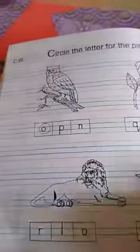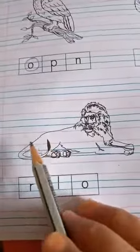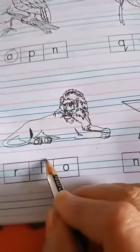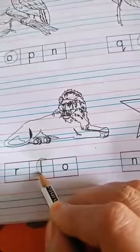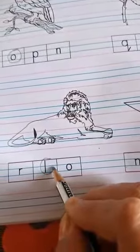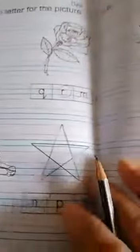Come to the next picture. This is the picture of a lion. Lion ka first letter kis se start hota hai? L. L for lion, and in phonic we pronounce L as L.